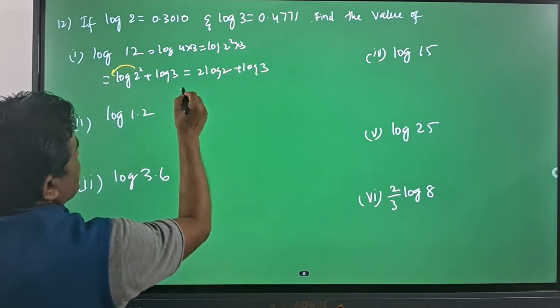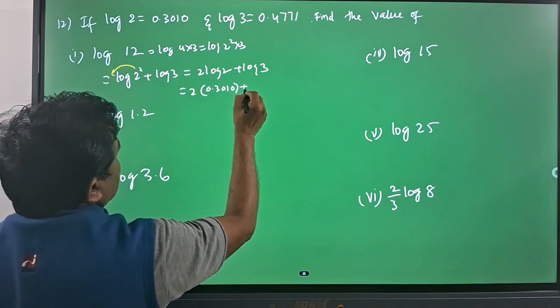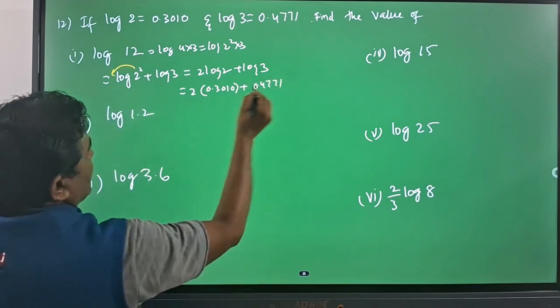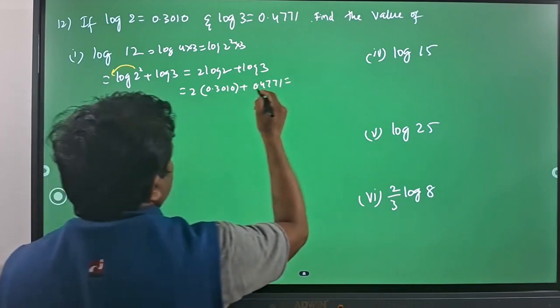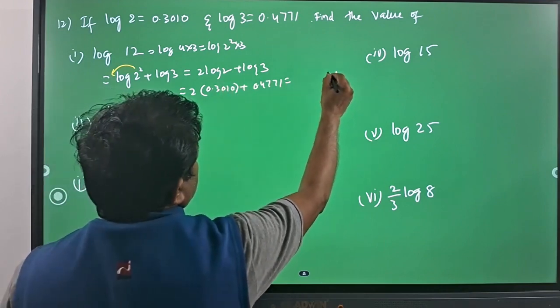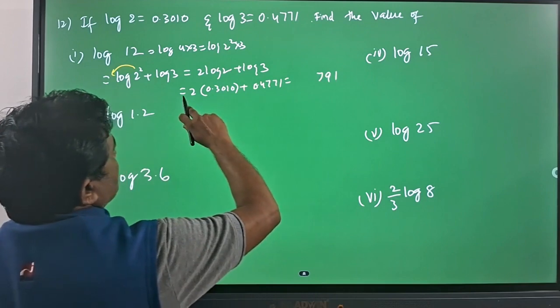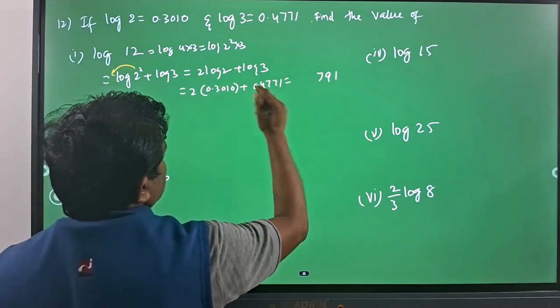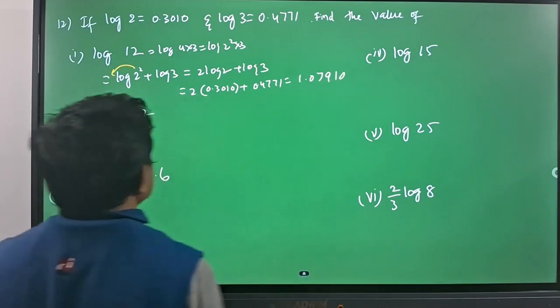So if we substitute the values 2 into 0.3010 plus 0.4771, by adding up you will have: 2 ones are 2 plus 9 is 11, 0 plus 7 is 7, 2 threes are 6, 6 plus 4 is 10. So you will have 1.0791, this is the value.